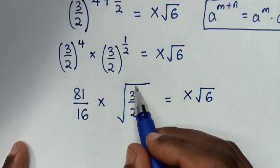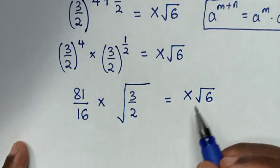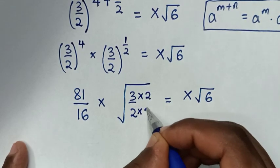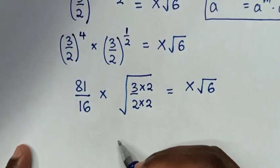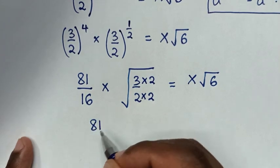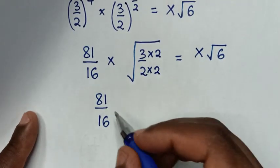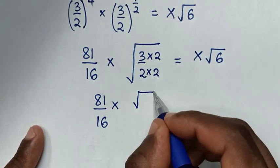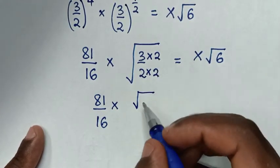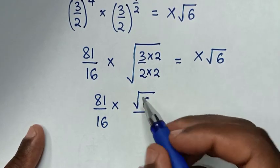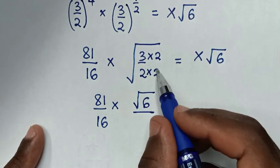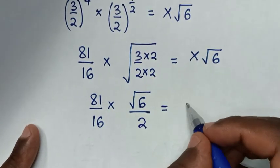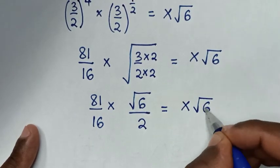For this to match x square root of 6, we multiply numerator by 2 and denominator by 2. So it becomes 81 over 16, times square root of 3 times 2 which is square root of 6, over square root of 2 times 2 which is square root of 4, and square root of 4 equals 2. This gives 81 over 16 times square root of 6 over 2, equal to x square root of 6.